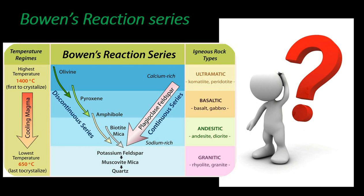In the discontinuous reaction series, the first mineral crystallized is olivine. Then it gives rise to pyroxene, then amphibole, followed by biotite. In the continuous reaction series, calcium-rich plagioclase (anorthite) transitions to sodium-rich plagioclase (albite).